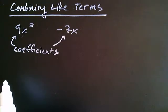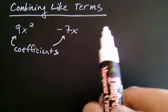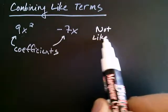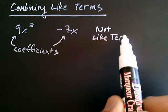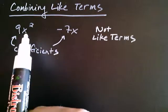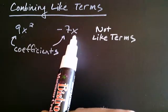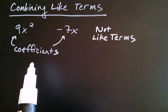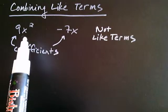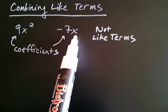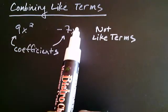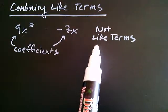Now, these two terms — the 9x squared and the negative 7x — they are not like terms. Two terms are like or similar if you have not only the same variable, but the same variable raised to the same exponent. Do you see why these terms are not like terms? Even though they both have the base as an x, this has x raised to the second power, and this has x raised to the first power. And therefore, they are not like terms.